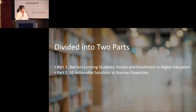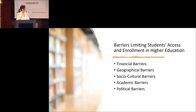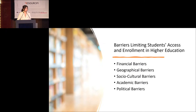Today we'll divide into two parts. The first part addresses barriers limiting students' success and enrollment in higher education. The second part discusses 10 actionable solutions to address these disparities. There are five key areas we have to pay attention to: financial barriers, geographical barriers, sociocultural barriers, academic barriers, and political barriers.